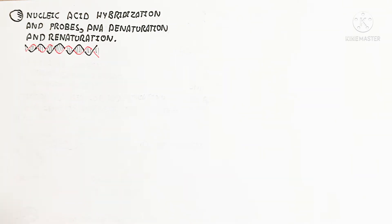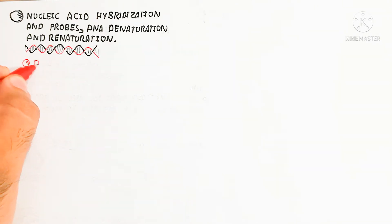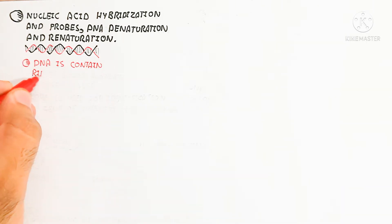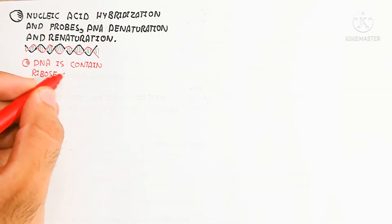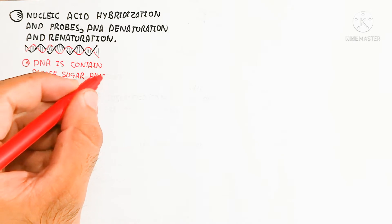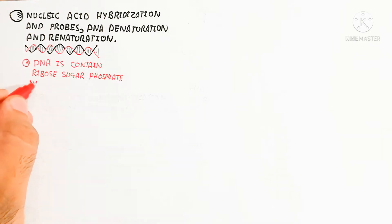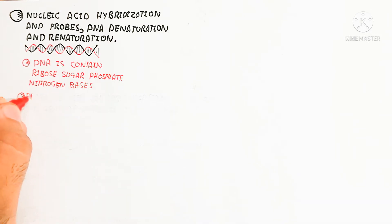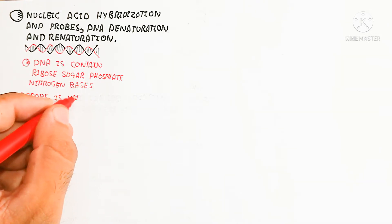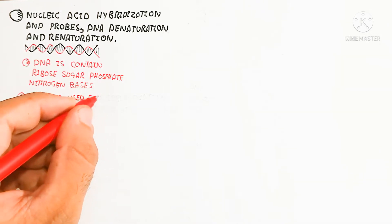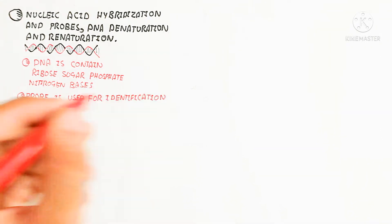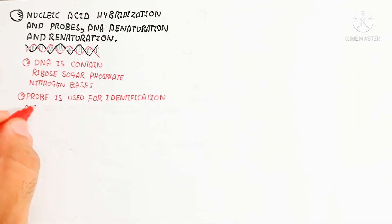DNA contains a ribose sugar, phosphate, and nitrogen bases. The backbone of DNA is the phosphate group and ribose sugar, which forms a two-strand antiparallel helical structure. This helical structure is unwound during DNA replication or other mechanisms.